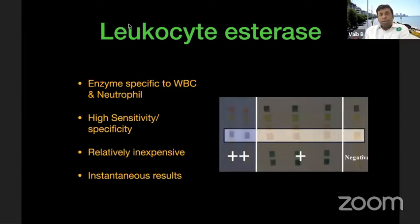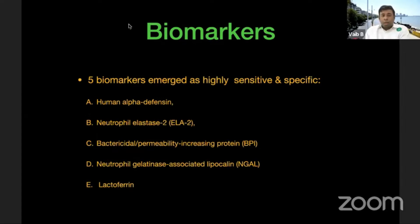Leukocyte esterase is another test increasingly being used. It is an enzyme specific to WBCs and neutrophils, with more sensitivity and specificity than ESR and CRP alone. It is relatively inexpensive and provides an almost instantaneous result. The only caveat is that the sample collected must not be contaminated with blood.